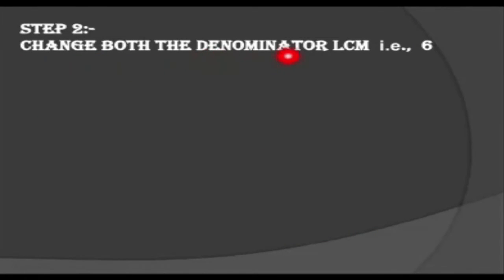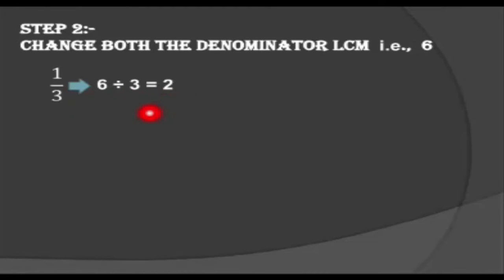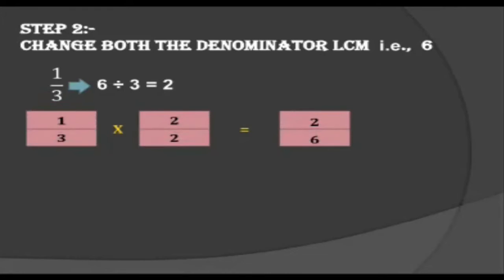In the second step, we need to change both denominators to the LCM, which is 6. For 1 by 3, we divide the LCM by the denominator: 6 divided by 3 equals 2. So we multiply both the numerator and denominator by 2 to make it a like fraction. 1 by 3 multiplied by 2 by 2 equals 2 by 6.